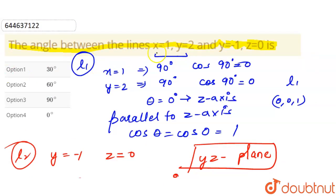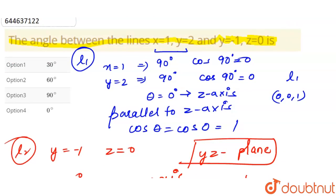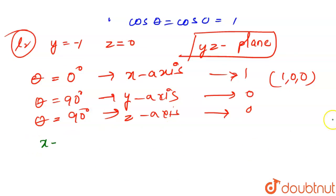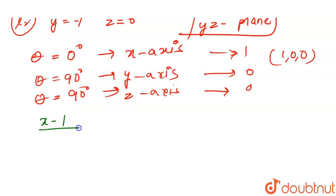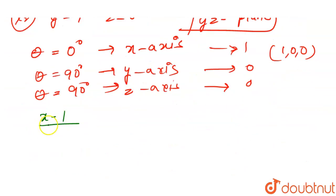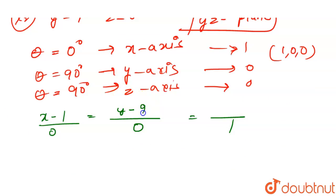Now we can write the equations for the lines. For line 1, the point is (1, 2, 0) since it is not lying on the z-axis, so z=0. The equation becomes: (x-1)/0 = (y-2)/0 = z/1.